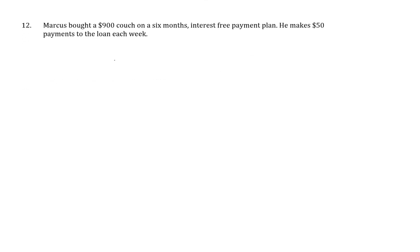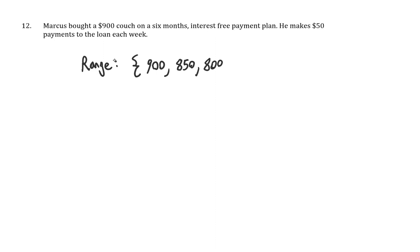Finally, number 12 is a real-world situation: Marcus bought a couch for $900 on a six-month interest-free payment plan, making $50 payments each week. Let's start with the range, since it's the easiest — he starts at $900 and pays down $50 each week: 900, 850, 800, 750, and so on down to zero. Using our knowledge of arithmetic sequences, it takes 18 weeks for him to pay off the loan, so the domain is from 0 to 18 weeks — a continuous interval since time is continuously changing.